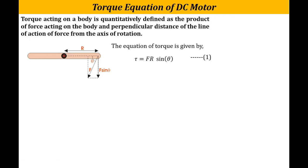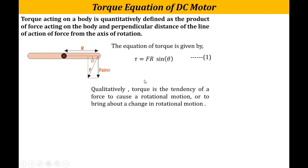The equation of torque is nothing but F into R sin theta, where F sin theta is the perpendicular component and R is the distance of the object from the axis. Qualitatively, torque is the tendency of a force to cause rotational motion. It is the cause by which rotational motion can be achieved, or if we want to bring about a change in rotational motion, we require a torque.